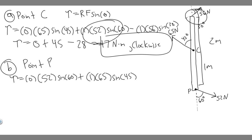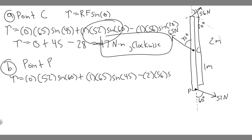Now let's do the force up here. It's pushing this way, so it's going to be going clockwise, therefore it's going to be negative. Minus the radius — the distance between the force and the pivot is two meters, because the whole beam is two meters. So two multiplied by the force, which is 56, multiplied by the sine of 30 degrees.